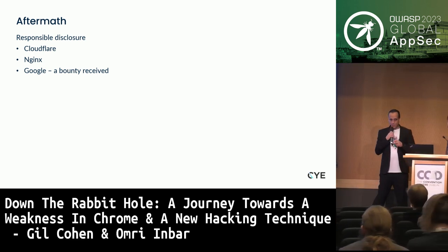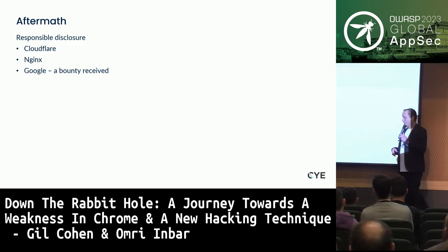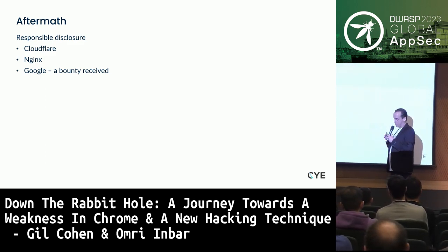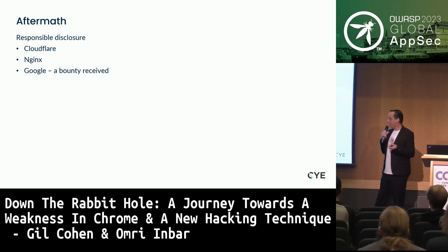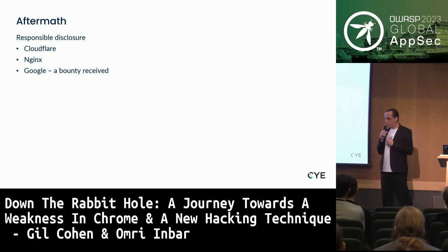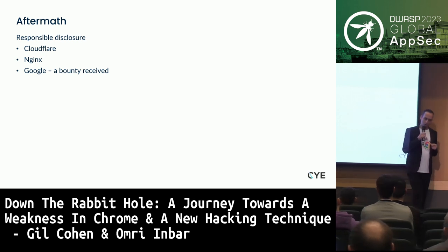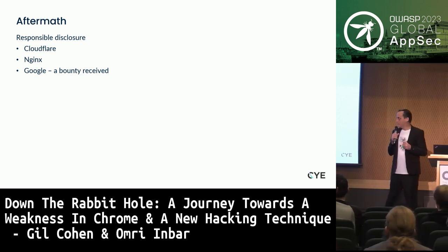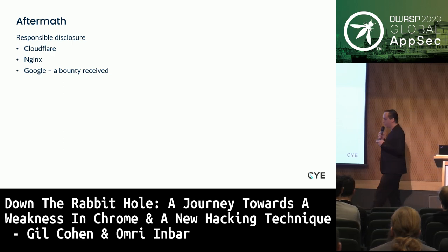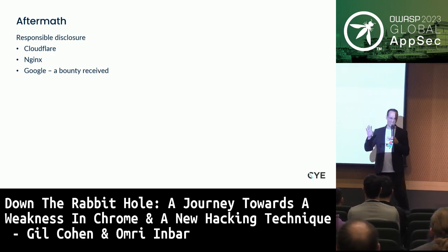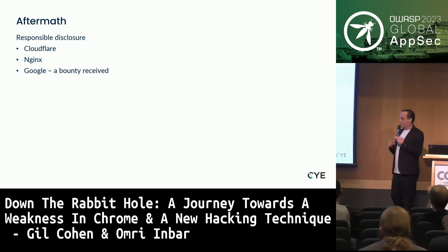For the aftermath: we responsibly disclosed to Cloudflare, saying their Railgun behavior swaps response header order. They said it's not the root cause, so not their problem. Nginx gave us the same response. Google fixed it — they fixed the Chromium browser, and as a result all other Chromium-based browsers were fixed. We received a small bounty, but Google is pretty cheap — it only financed the beers we're drinking here in Ireland.